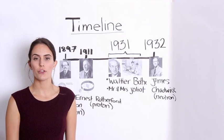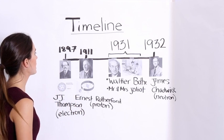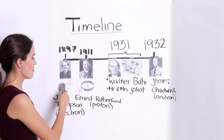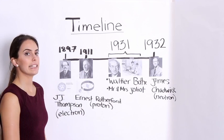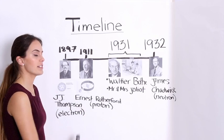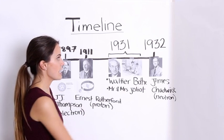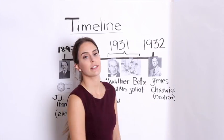So let's go through a brief timeline. In 1897, the electrons were discovered by JJ Thompson. In 1911, Ernest Rutherford discovered the protons. In 1932, James Chadwick discovered the neutron.